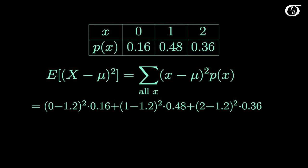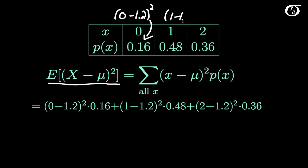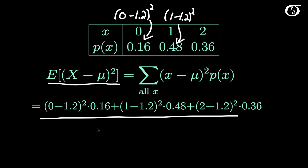Now suppose we want to find our variance — the expectation of (X minus mu) squared. We go about it in a very similar way: each (x minus mu) squared times the probability of occurring. Our first value is 0; we subtract the mean 1.2, square it, and multiply by its probability. Then 1 minus 1.2 squared times its probability, and so on for all values. Adding them up, we get that sigma squared — the variance of our discrete random variable X — is equal to 0.48.